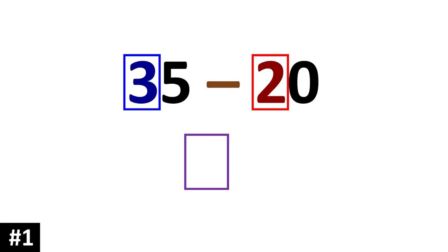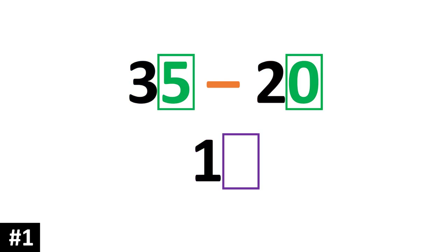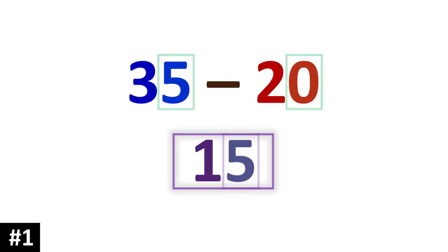So let's take a look at our first example: 35 minus 20. The key to subtracting any two-digit number by 10s is first we ignore the ones column and just focus on the 10s. 35 has three 10s and 20 has two 10s, so we just say 3 minus 2, which gives us 1. Then we look to the ones digit: 5 minus 0 is 5. So 35 minus 20 is 15.